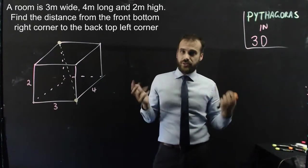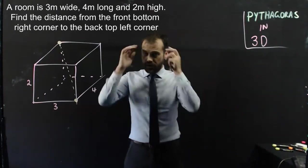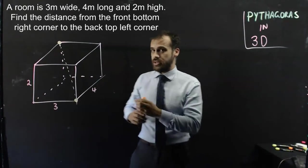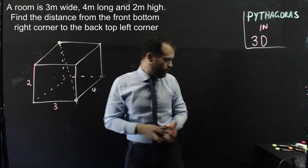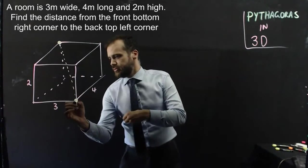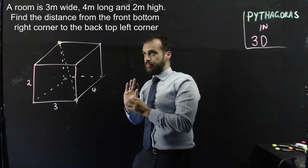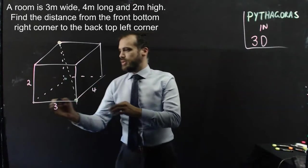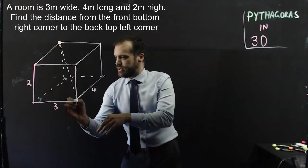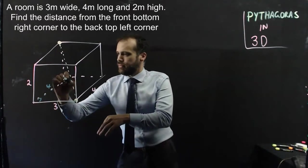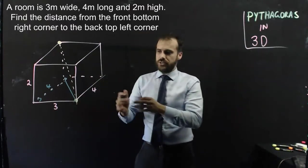We're trying to find the distance from there to there. We don't have a three-dimensional Pythagoras formula, so we can do it in two steps. We create two triangles — first of all, a triangle on the floor from this corner to this corner, from the bottom front right corner to the bottom back left corner. This is a right angle — it's the floor.